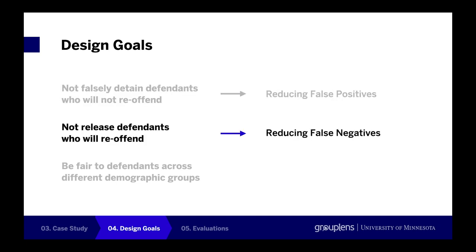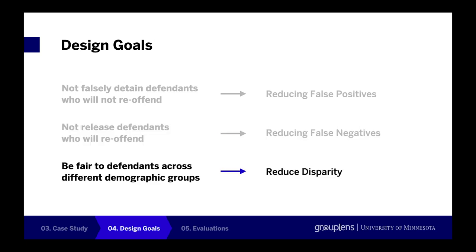The second design goal is not releasing defendants who will re-offend, because this might cause danger for society. This goal corresponds to reducing false negatives in the system criteria. The third design goal is to be fair to defendants across different demographic groups. This corresponds to the disparity in the system criteria, which is defined as disparity in false positive and false negative rates between different demographic groups.